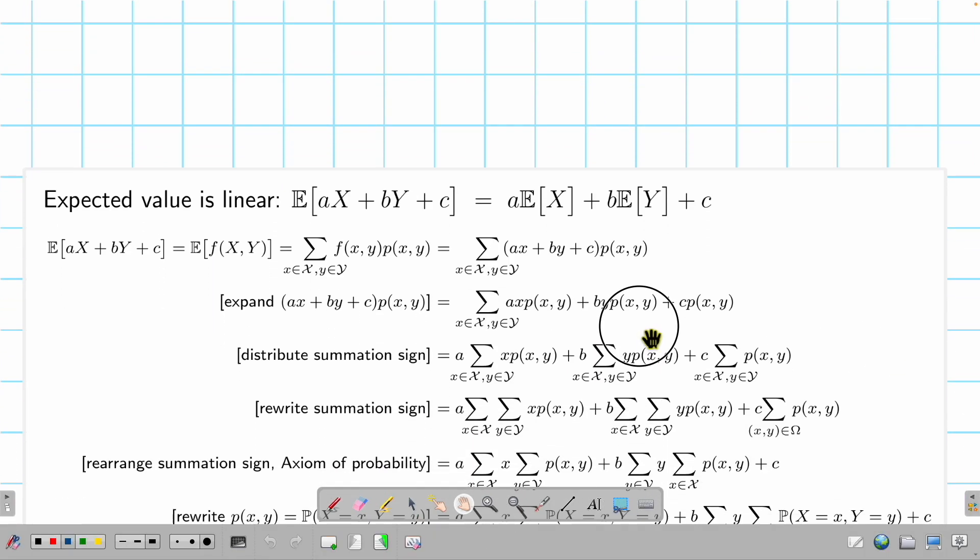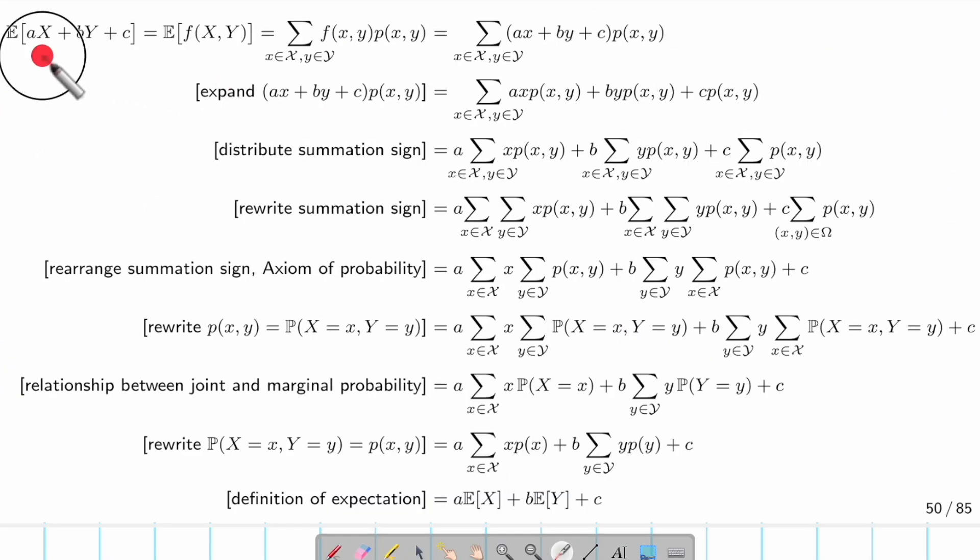We're going to look at how we prove this. We want to have the expected value of aX + bY + c, so this is our function f, f of X and Y.